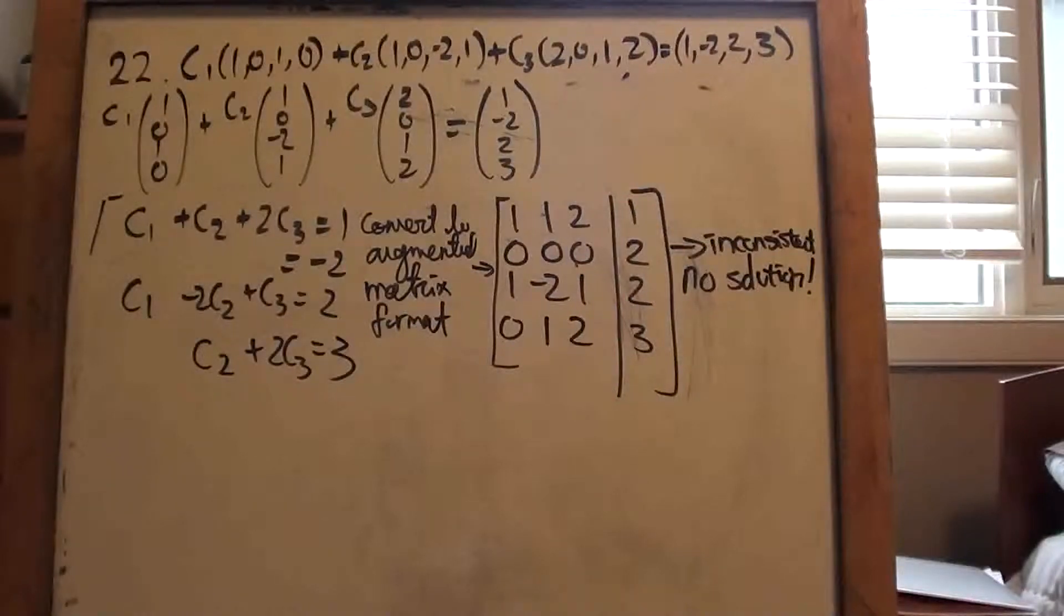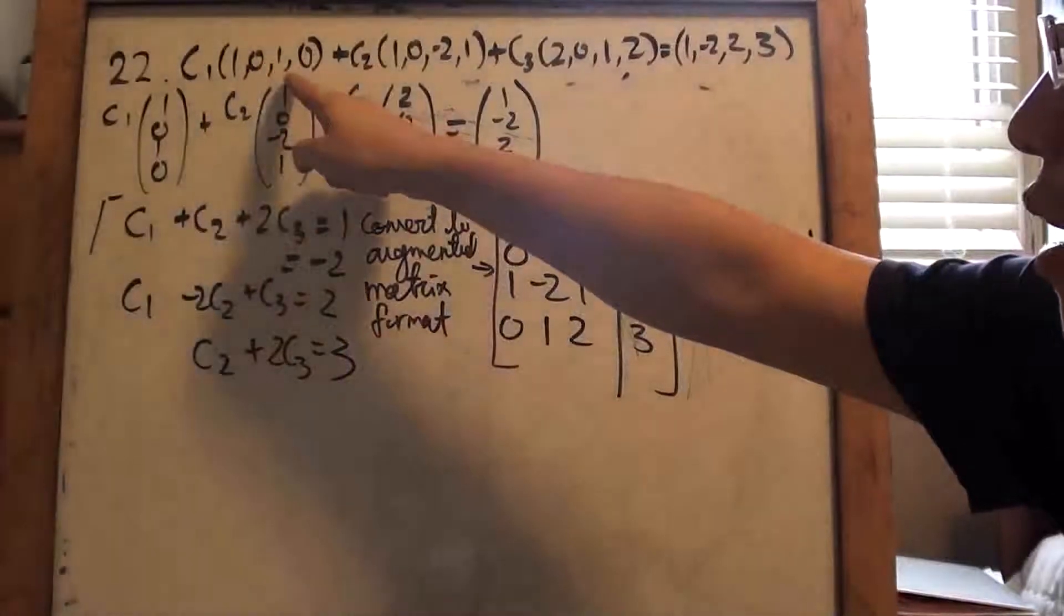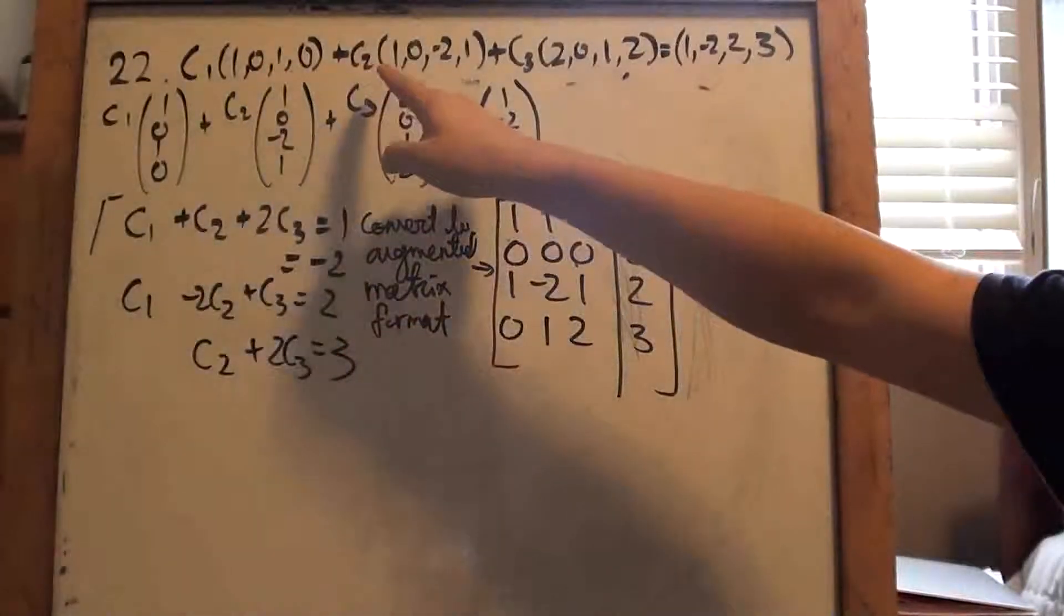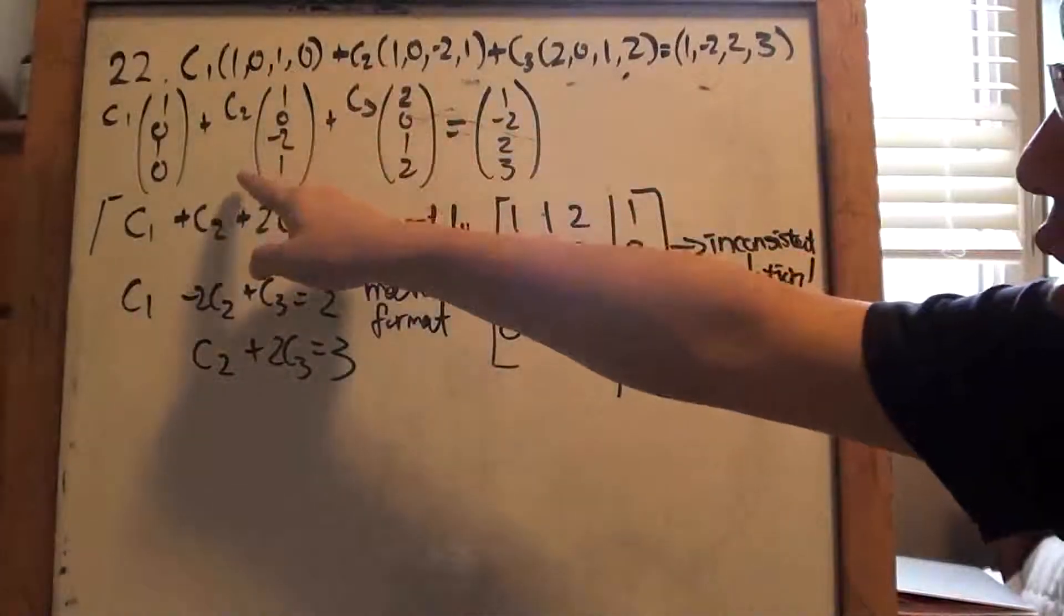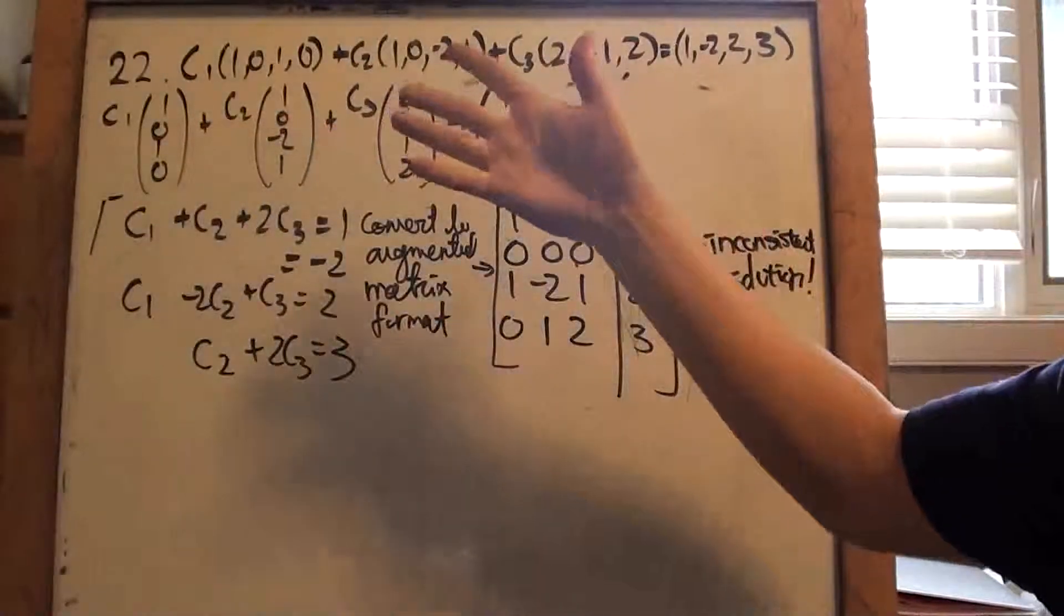And, yeah, it turned out to be pretty easy, actually. Once I, I wasn't, apparent, obvious at first when I first had this format, but once I put it into a column vector, I was like, wait a minute. Zero, zero, zero, zero, negative two. Done, right? I still wrote it out, because, you know, I have to show the work. I wish I could just stop, he's like, done, right?